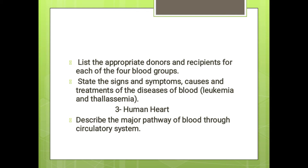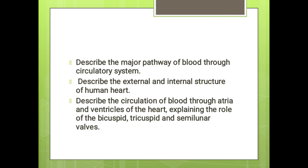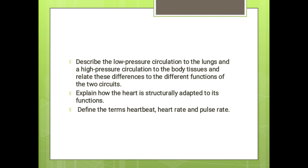The next topic is the human heart. We will discuss the major pathway of blood through the circulatory system. We will see the external and internal structure of the human heart in detail. Describe the circulation of blood through the atria and ventricles of the heart, explaining the role of bicuspid, tricuspid, and semilunar valves.